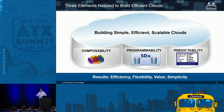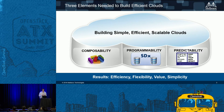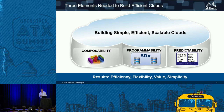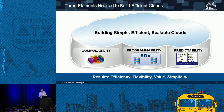When we look at building clouds, we really see three elements that are required. The first is composability — that's where the Lego comes in. The second piece is programmability, where software-defined everything comes into play, including software-defined storage. The last is predictability, which is where you can get into troubles when you deploy things. The results people are looking for are flexibility, efficiency, value, and simplicity, and OpenStack really brings all of these different pieces together.